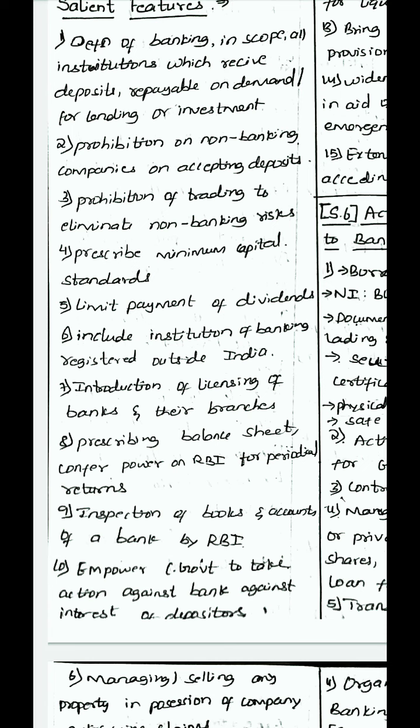Prohibition of trading to eliminate non-banking risks. Prescribing minimum capital standards. Limiting payment of dividends. Including institutions of banking registered outside India — banking institutions which have their headquarters in India but have branches outside India are within the scope of this act. Introduction of licensing of banks and their branches. Prescribing balance sheet, conferring powers on RBI for periodical returns — all banking institutions should give periodical returns to RBI.